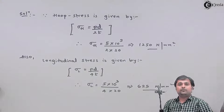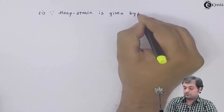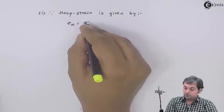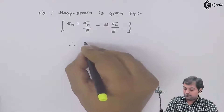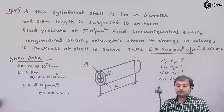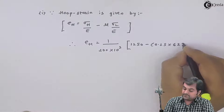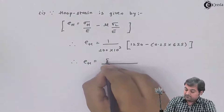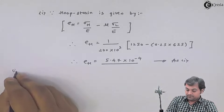Now I can go for the calculation of hoop strain. Hoop strain E_h = sigma_h / E − mu × sigma_L / E = (1/E) × (sigma_h − mu × sigma_L). Therefore hoop strain = 1 / (200×10³) × (1250 − 0.25 × 625). The hoop strain comes out to be 5.47×10⁻⁴. Since it is strain, it has no unit. That is the first answer.